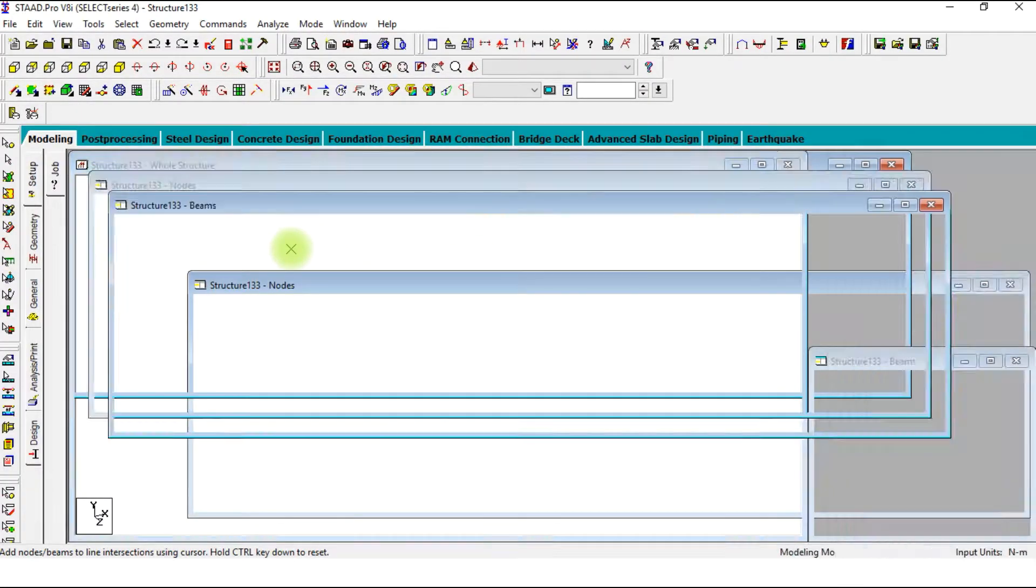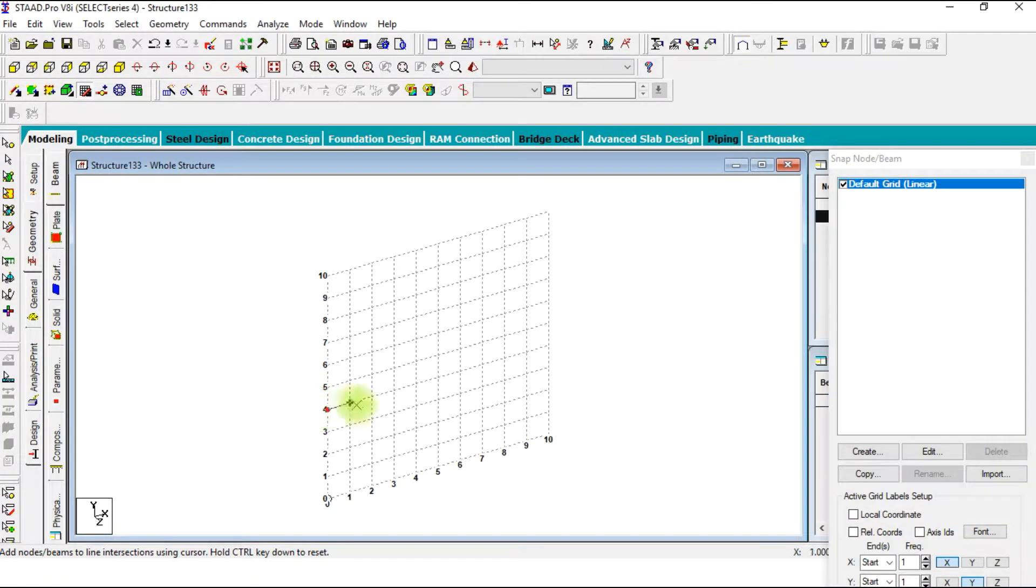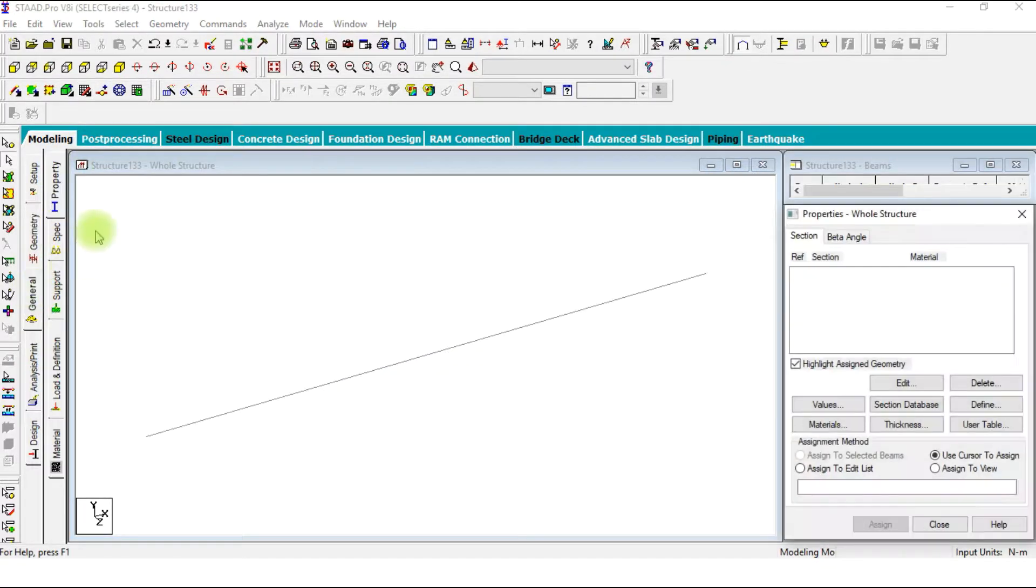Create a four meter long beam. Now we are going to apply a section property.